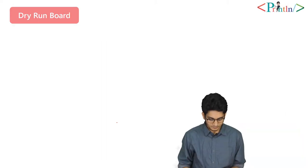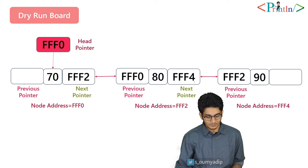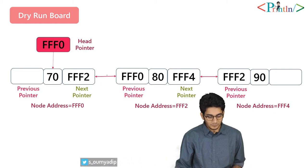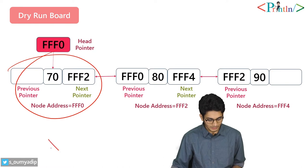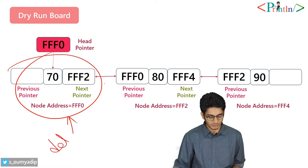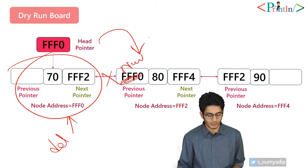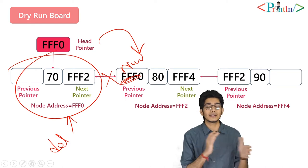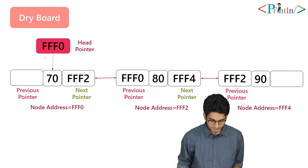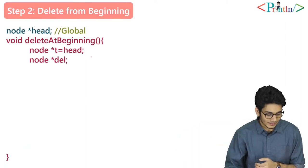In this doubly linked list diagram, we store the first node into del, so del points to that node. Then we discard its connection by setting it to null, and move head to point to the next node. This is how we delete any element from the beginning of a doubly linked list.